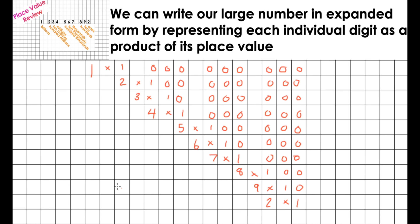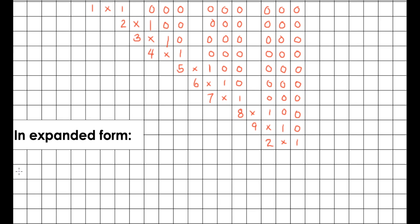If we were to add all of our numbers together here, we would find that the sum of all of this will equal our number in standard form. So that's one way that you can go through and check your work. Now what we can do is actually list our numbers as the product of the multiplication and write it in standard form.